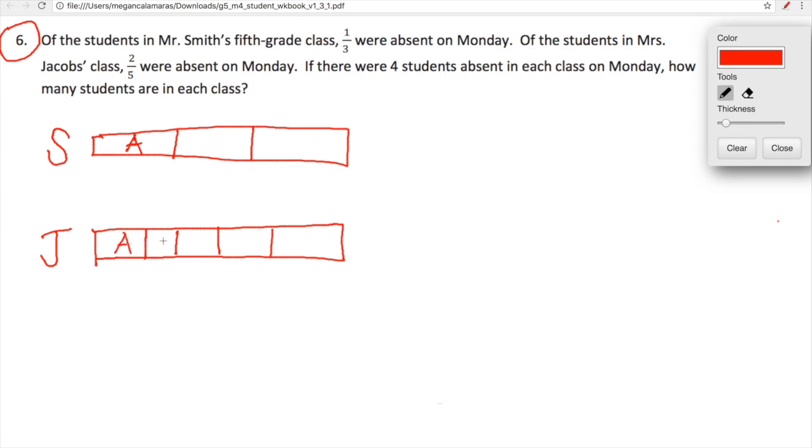Okay, so 1 third and 2 fifths absent. If there were 4 students absent in each class on Monday, how many students are in each class? Well, if there were 4 students absent in Ms. Smith's class, there's 4 in that space. This is divided equally, so there must be a 4 in each of the boxes. Well, okay, 3 times 4 equals 12. So there are 4 kids absent in Mr. Jacobs's class.